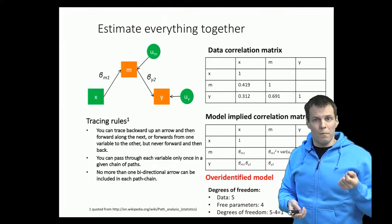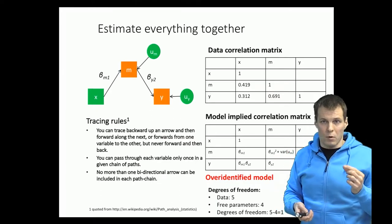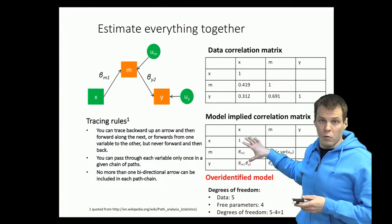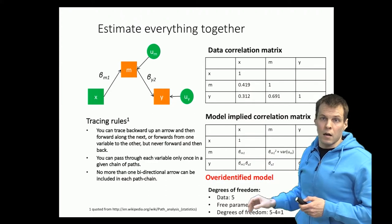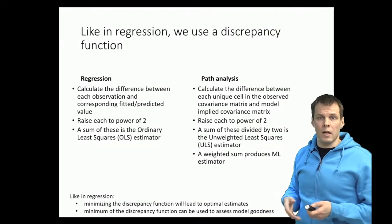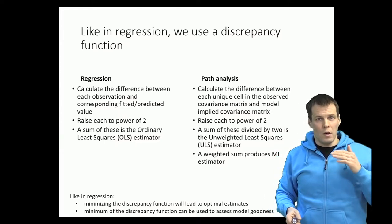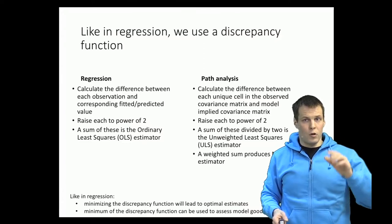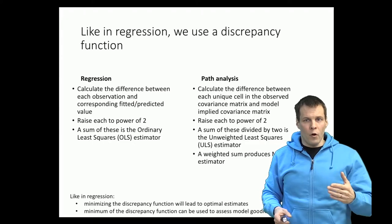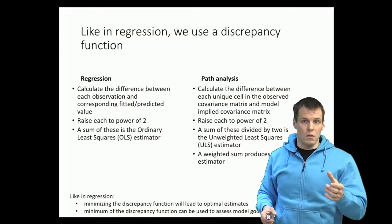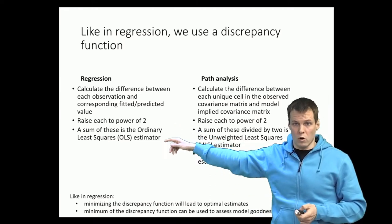To make the model-implied correlation matrix as close as possible to the data correlation matrix, we need to define what we mean by 'close' — that is, how to quantify the distance between them. This problem is comparable to regression analysis, where we use a discrepancy function: we calculate residuals (differences between the regression line and actual observations), square them to penalize large prediction errors, sum the squares, and minimize — giving us the ordinary least squares estimator.